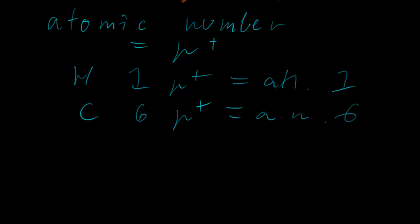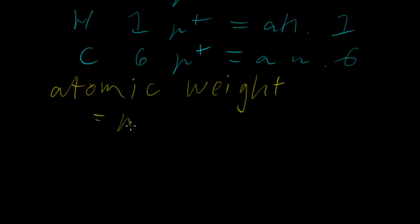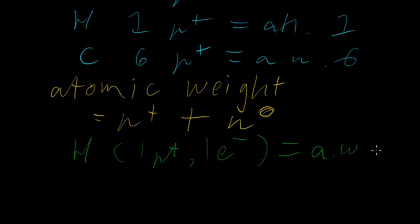Another thing that you need to probably be aware of is atomic weight. And atomic weight is equal to the protons plus the neutrons. Now, the electrons technically do have weight, but they're very, very light in comparison to the protons and the neutrons, so we won't factor them in to our calculations. But let's take the example of hydrogen. Hydrogen has one proton. It doesn't have any neutrons, but it has an electron. And so its atomic weight is one. And carbon, it has six protons, six electrons, and six neutrons, so its atomic weight is 12.